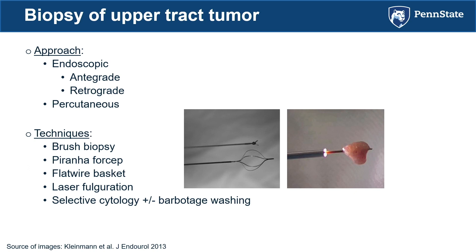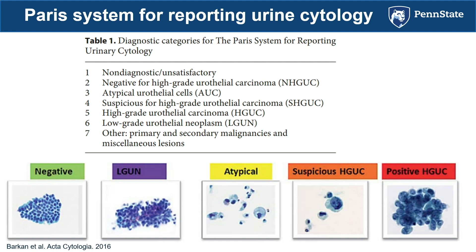The Paris system for reporting urine cytology should be how our pathologists report findings. This standardized reporting criteria includes: 1) non-diagnostic/unsatisfactory; 2) negative for high-grade urothelial carcinoma; 3) atypical urothelial cell; 4) suspicious for high-grade urothelial carcinoma; 5) high-grade urothelial carcinoma; 6) low-grade urothelial neoplasm; and 7) other malignancy involving the upper tract. From my perspective, categories four and five — suspicious or confirmed high-grade urothelial carcinoma — are treated similarly.